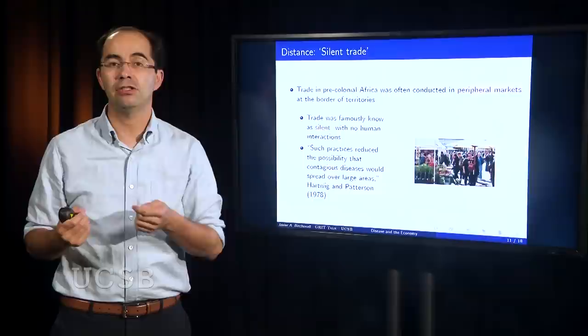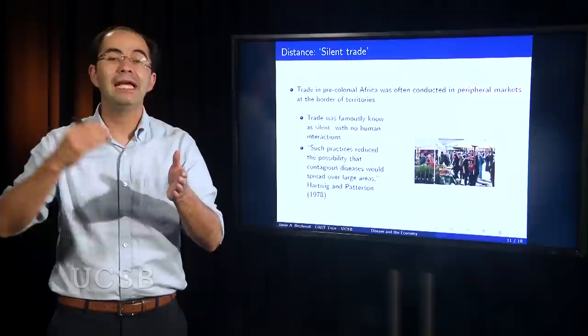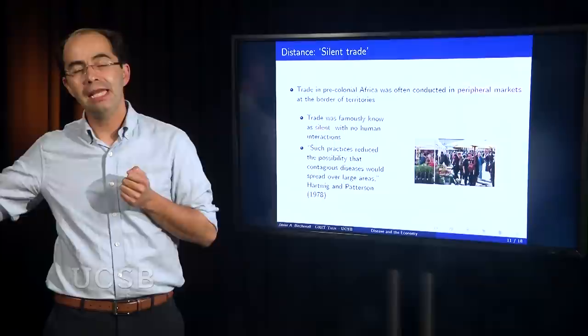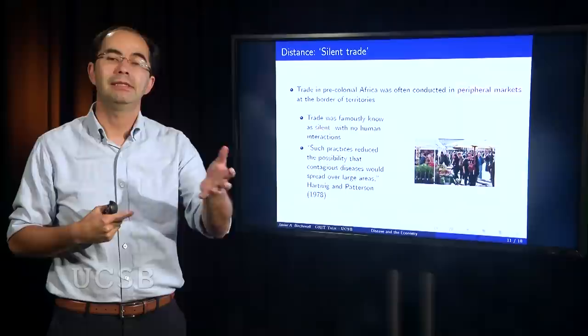So they face the goods, they make the offer, let's say in gold or money, and then they retreat. The first group comes back, check the offer. If the offer is appealing, it's satisfactory, they take the money, leave the goods, and retreat. And then the other group comes back, seeing that the offer was good and was accepted, then they take the goods and they leave. It is exchange. But there is no interpersonal interactions in this protocol.